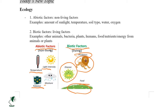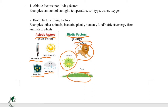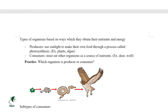Now we're going to learn about different types of organisms based on the way they obtain nutrients and energy — basically, food. We can divide all organisms into two groups: producers and consumers. Producers are organisms that use sunlight or other sources to make their own food, for example plants or algae in the ocean or lake.